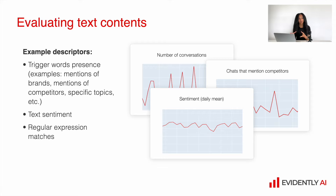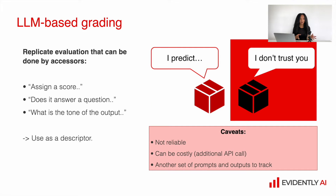For some problem statements it makes sense to build text sentiment or maybe regular expression matches. You can even build large language model-based grading, which is a wonderful idea — just imagine that your descriptors would help you assign a score, check whether the output answers a specific question, or determine what the tone of the output is.